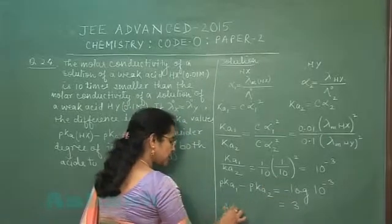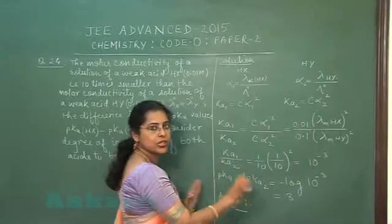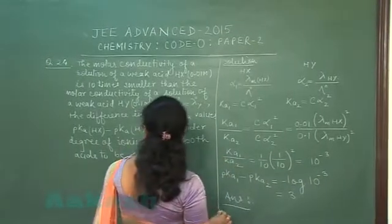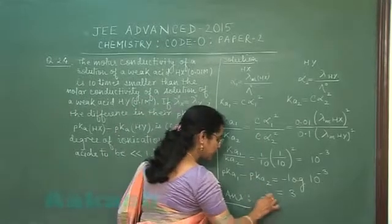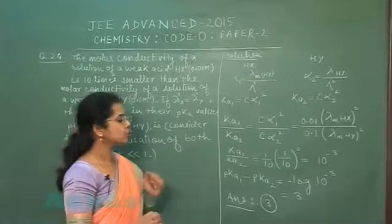It means pKa1 and pKa2 का जो difference calculate हुआ, that is 3. So answer of this question, it means difference of the pKa1 and pKa2 should be equal to 3. So answer should be 3 in this question.